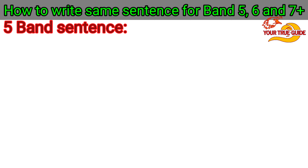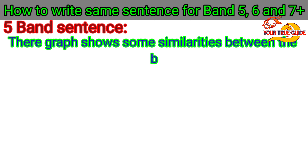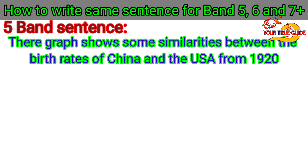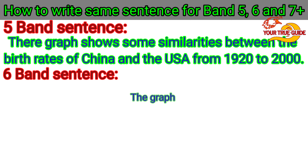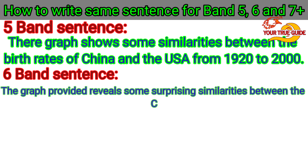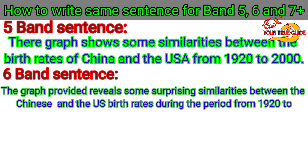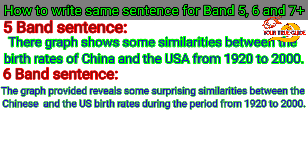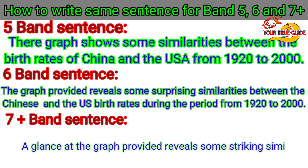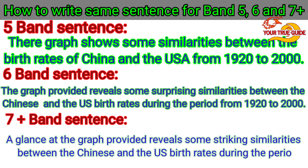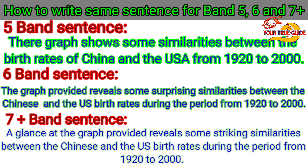Next sentence with 5 bands: 'The graph shows some similarities between the birth rates of China and the USA from 1920 to 2000.' Same sentence with band 6 formation: 'The graph provided reveals some surprising similarities between the Chinese and the US birth rates during the period from 1920 to 2000.' For 7 plus bands: 'A glance at the graph provided reveals some striking similarities between the Chinese and the US birth rates during the period from 1920 to 2000.'